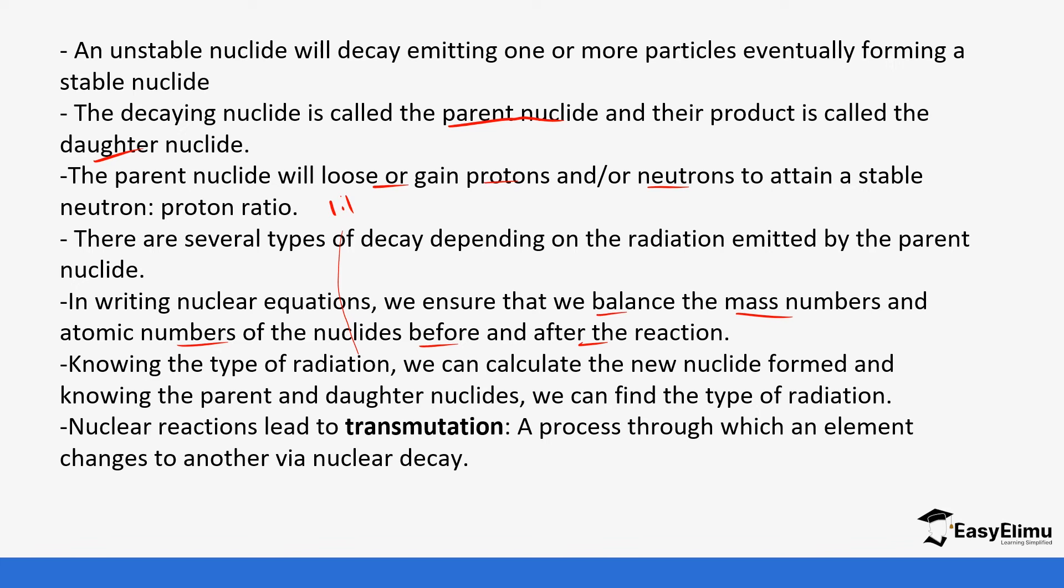Nuclear reactions can lead to transformation. This is a process in which an element changes to another via nuclear decay. You notice the elements you're going to be working with - you might start with a certain type of element, and when it undergoes some emissions or decay it forms different types of elements. This is possible because the number of protons might change in the nucleus which automatically changes the identity of the element.